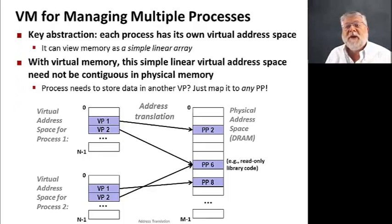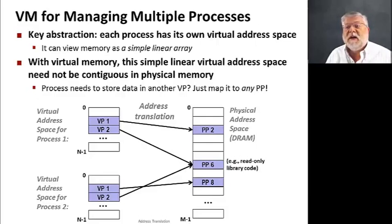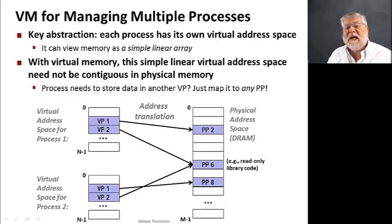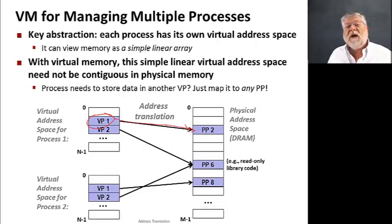How does virtual memory manage multiple processes? The key abstraction is that each process has its own virtual address space. The virtual address space is a simple linear array of one byte after the other. But this linear virtual address space does not need to be contiguous in physical memory. Because we're mapping things at the level of pages or blocks of virtual memory, we can put any virtual page at any location — any physical page — in physical memory.